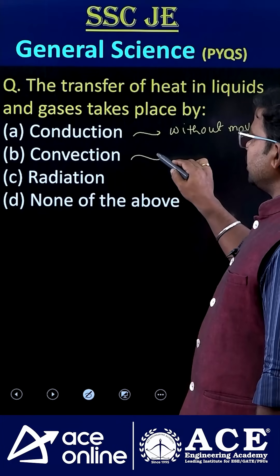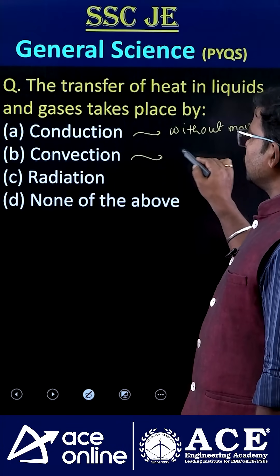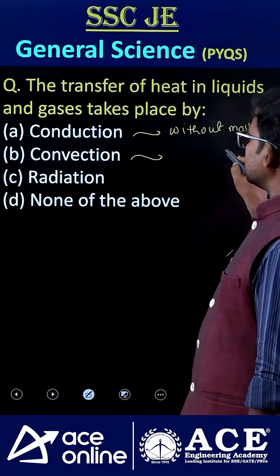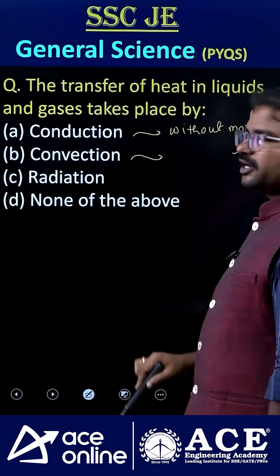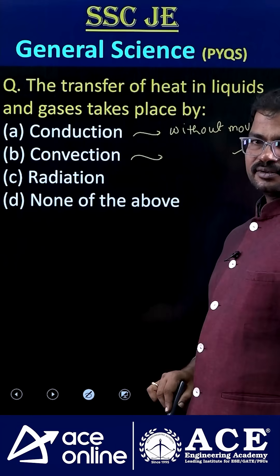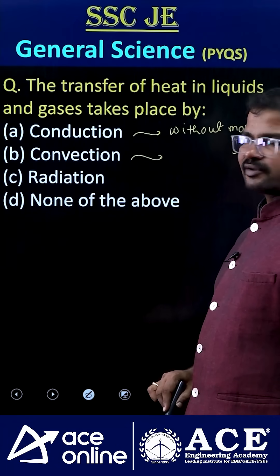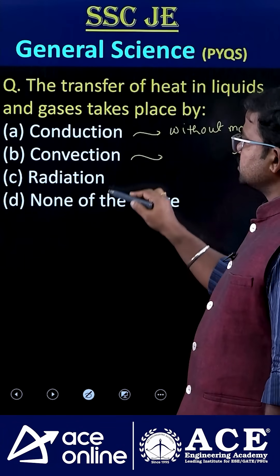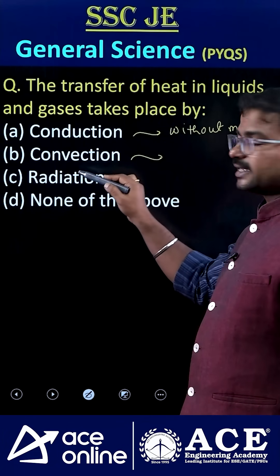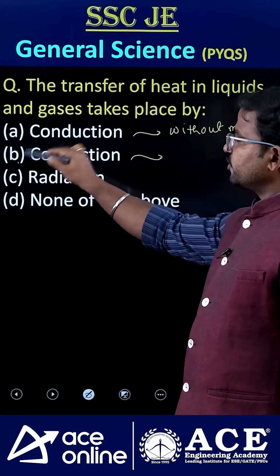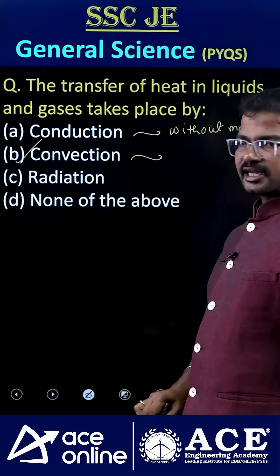Convection means by the movement of particles heat can be transmitted. We can observe it in both liquids and gases. That's why option B is the correct one.